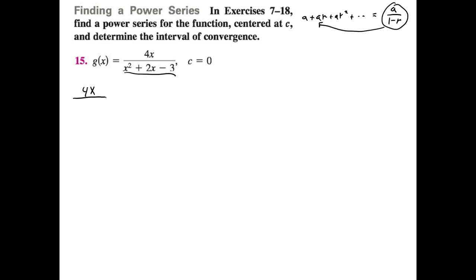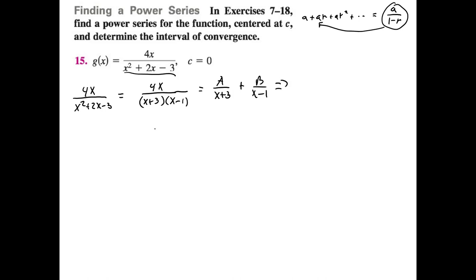So we have 4x over (x² + 2x - 3), which can be rewritten as 4x over (x+3)(x-1). This can be broken up as A/(x+3) + B/(x-1). We find A and B by multiplying both sides by (x+3)(x-1), which gives us 4x = A(x-1) + B(x+3).